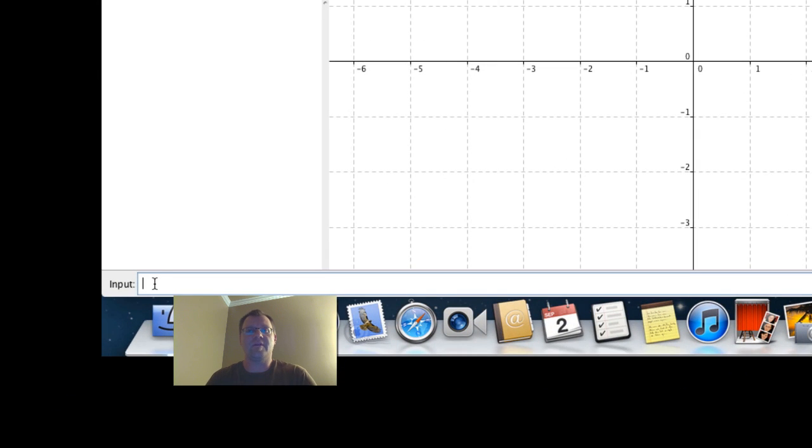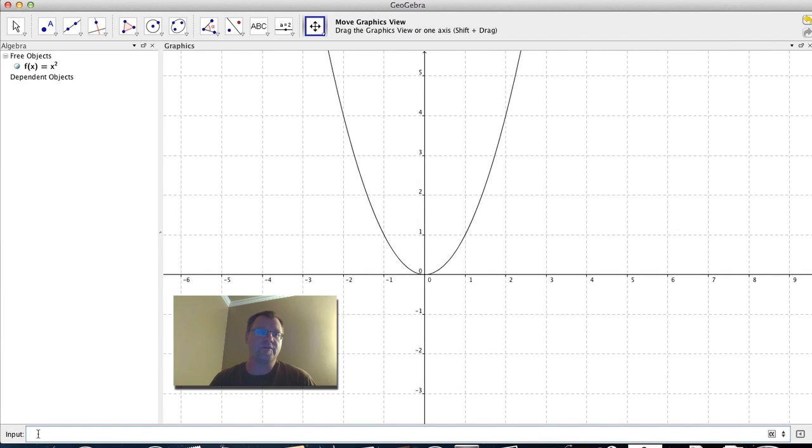And in most of the software that we use, we don't have to put the equal sign, we just need to put in the function. So we're just going to graph plain old x squared. So we use x, and then we use the symbol for exponent and squared, hit return. And ta-da, we've got ourselves f of x equals x squared.